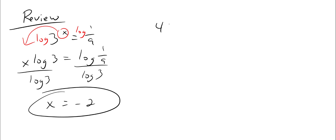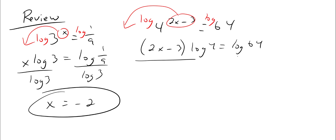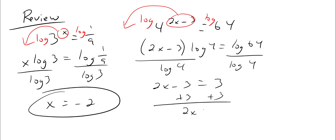Another review problem: four to the (two x minus three) equals 64. Take the log of both sides, moving the exponent to the front: (two x minus three) times log of four equals log of 64. Divide both sides by log of four. Log of 64 divided by log of four equals three, so two x minus three equals three. Add three: two x equals six, divide by two: x equals three.